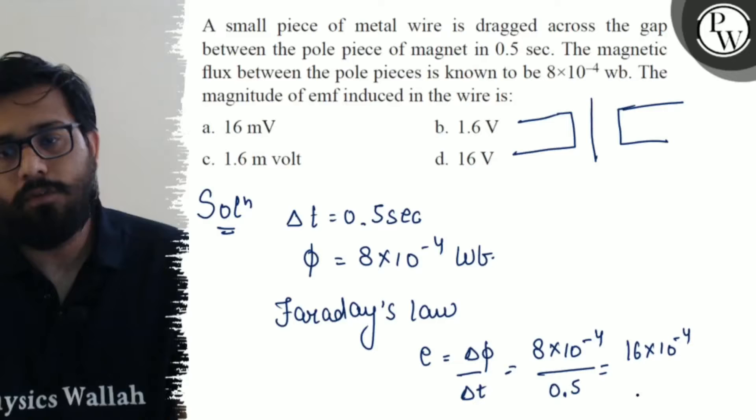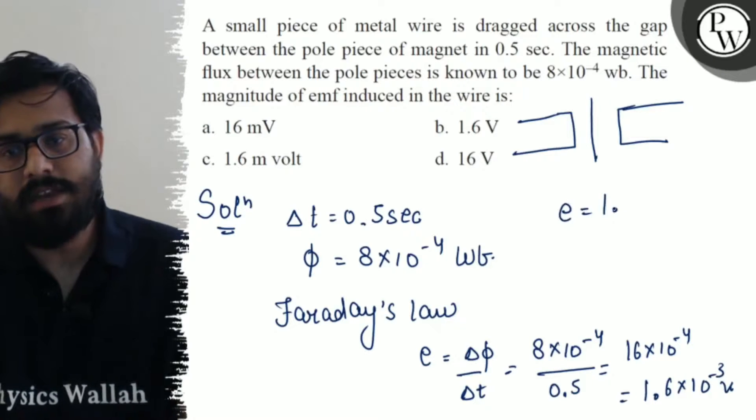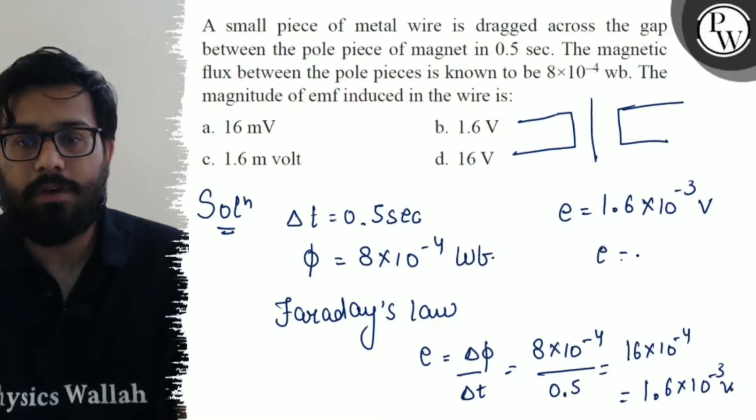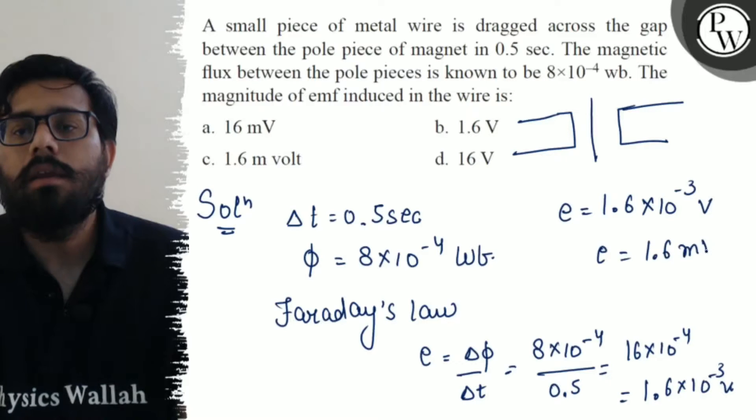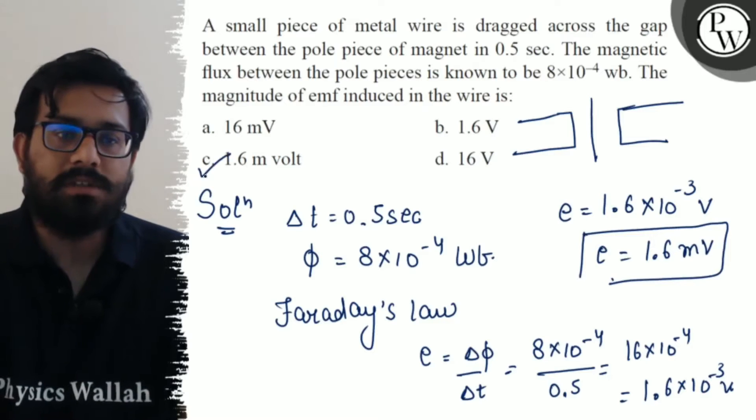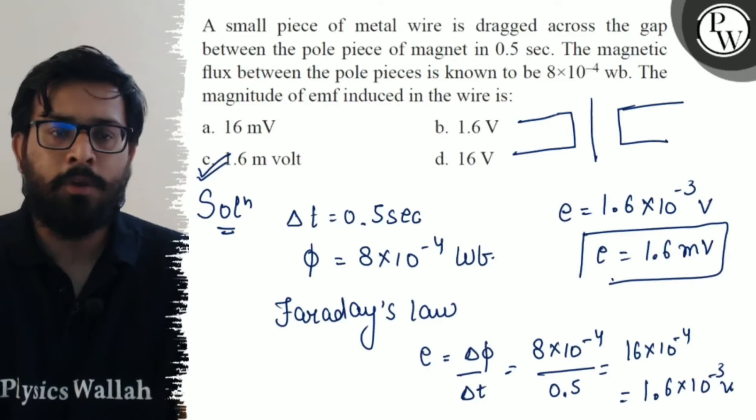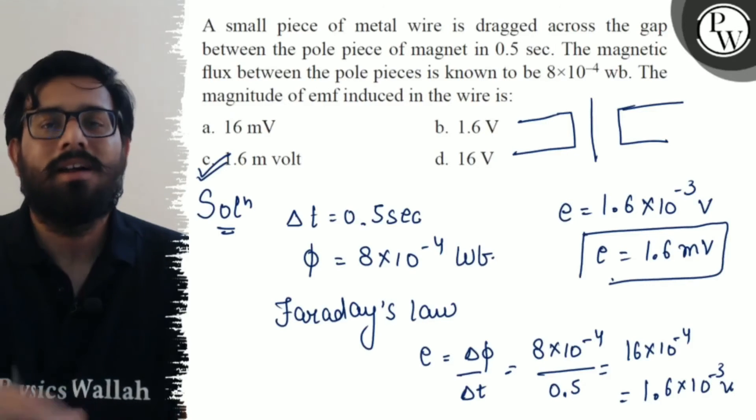1.6×10^-3 volt. So 1.6×10^-3 volt can also be written as 1.6 millivolts. This is your induced emf, which is in option number c. So option c is absolutely right. I hope you got the concept for this question, all the very best.